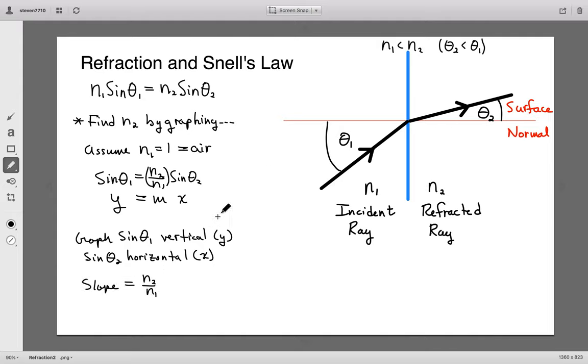So whatever slope you get from your line of best fit, a number, that's equal to N2 over N1, which is pretty much equal to N2 since N1 is to a good degree of accuracy, just one.